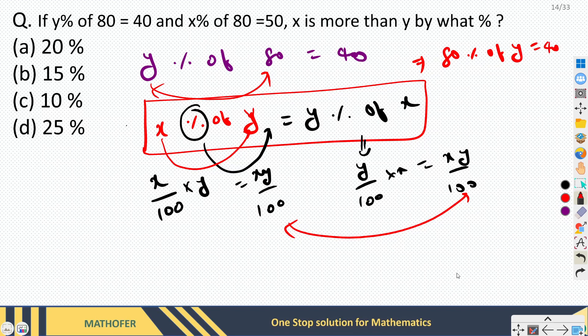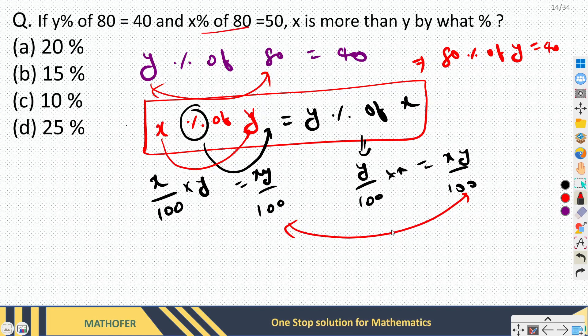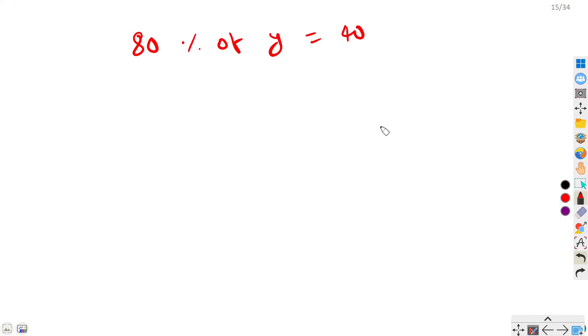Let us go to next page. 80 percent of y equal to 40, and the second one is x percent of 80 equal to 50. Now can I use the same trick again? I can swap these two, so I can rewrite this as 80 percent of x equal to 50.